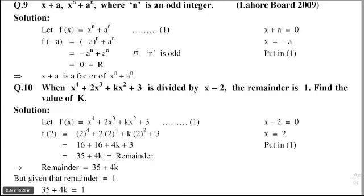2 power 4 is equal to 16, 2 power 3 is equal to 8, 2 times 8 is 16, 2 power 2 is equal to 4, so 4k plus 3. Therefore 16 plus 16 is 32, 32 plus 3 is 35, so 35 plus 4k is the remainder.